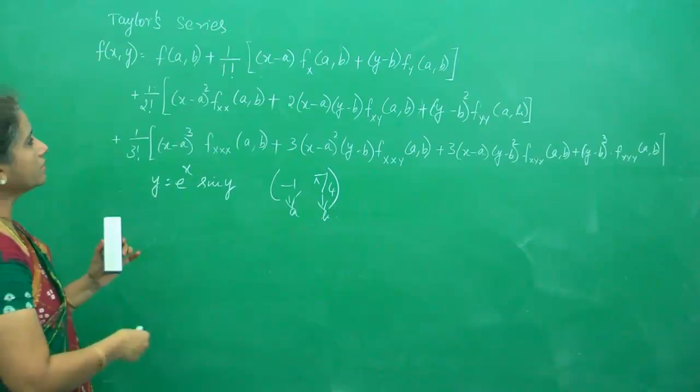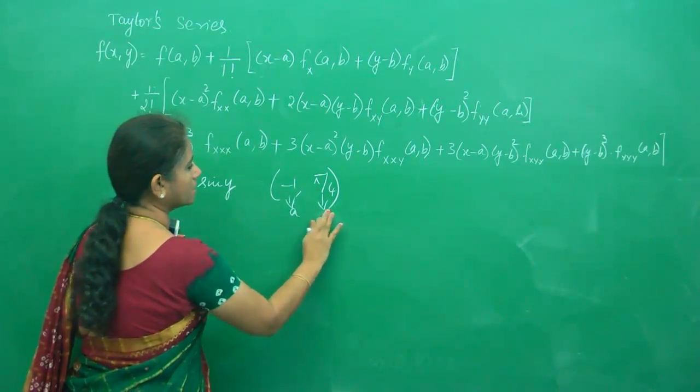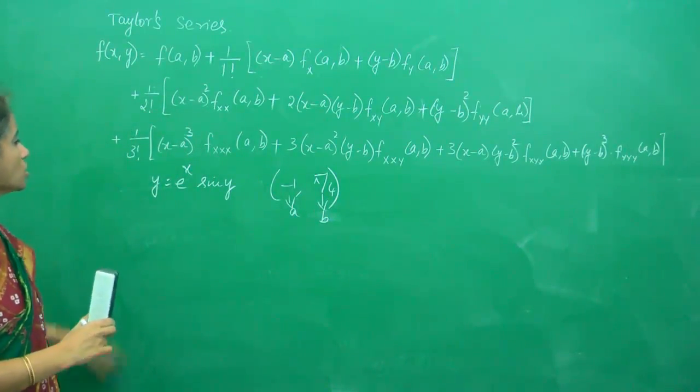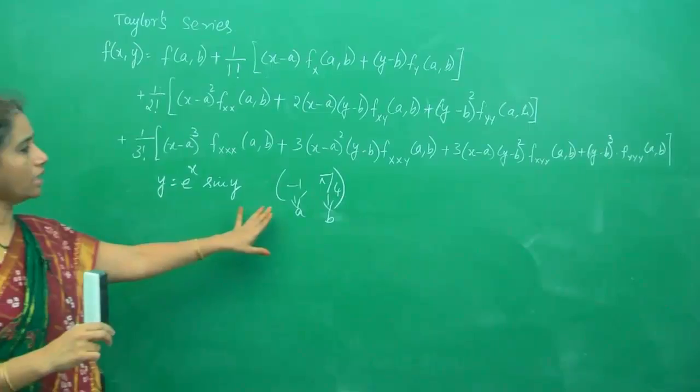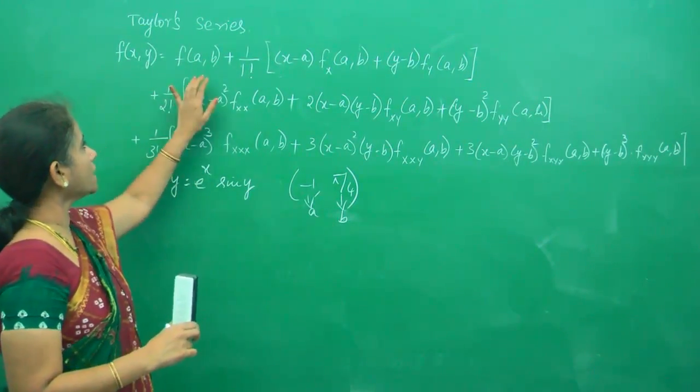Don't get confused. Sometimes I write b like this, sometimes like that, but it's wise to write it consistently. So f is e^x sin y, a is -1, and b is π/4. Let us start.